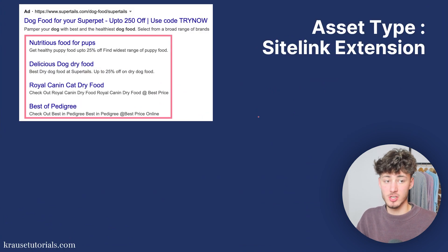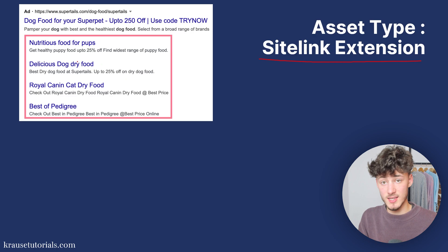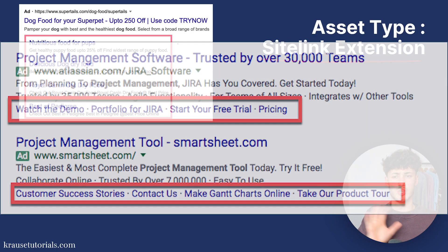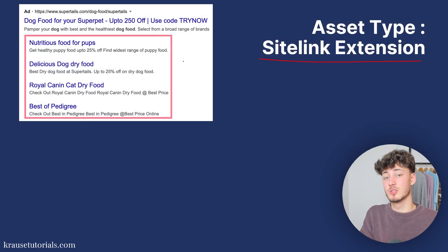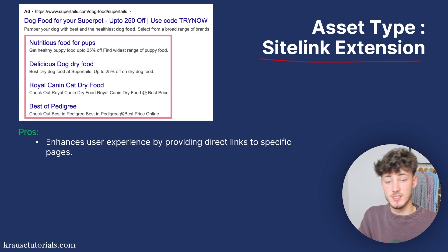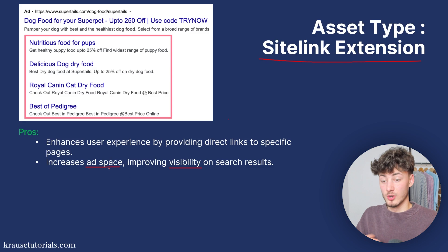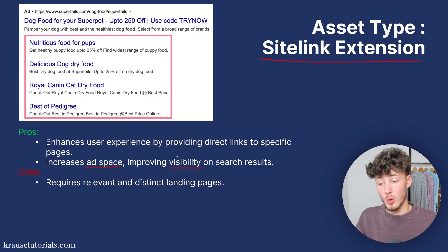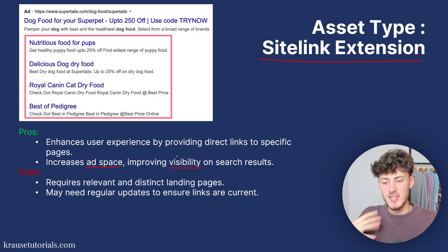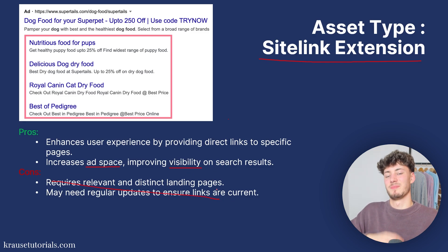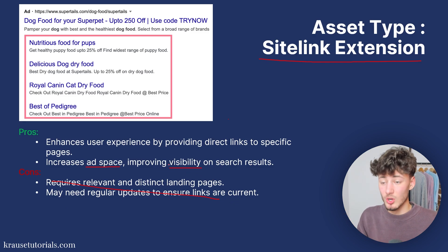First we have the sitelink extension. These mostly show up as direct links under your ad, though Google sometimes shows them smaller or not at all. The pros are that they enhance user experience by providing direct links to specific pages and increase ad space. The cons are that they require relevant and distinct landing pages and may need regular updating. I would highly recommend setting up sitelink extensions because they improve your ads tremendously. Best used to direct users to pages like product categories, contact pages, or special offers — for example, a portfolio, your offer, or clients you've worked with.